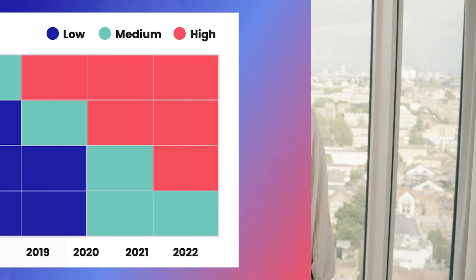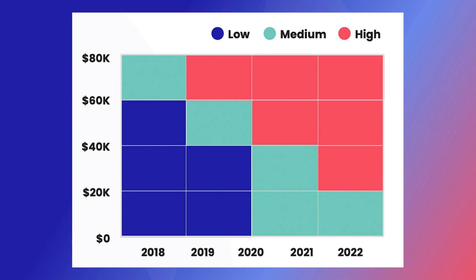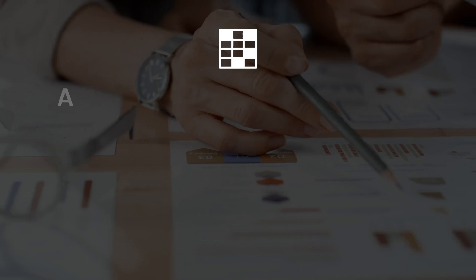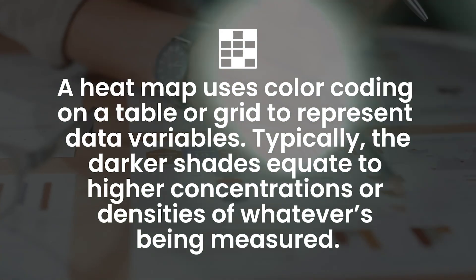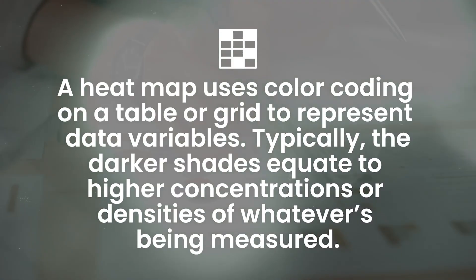A great option for visualizing correlations between large data sets with many variables is a heat map. Unlike maps that show real places, a heat map uses color coding on a table or grid to represent data variables. Typically, the darker shades equate to higher concentrations or densities of whatever is being measured.